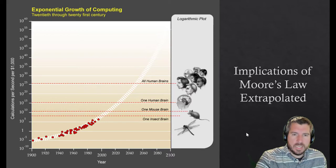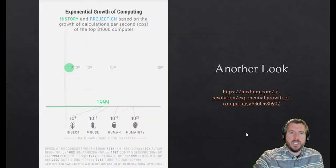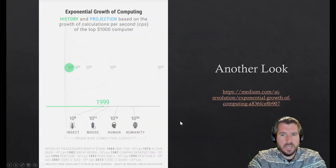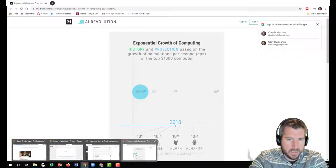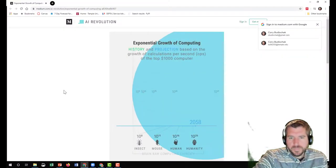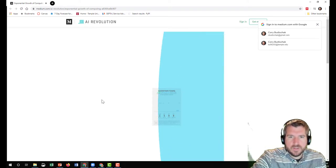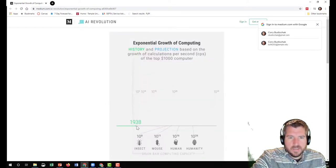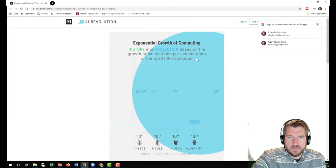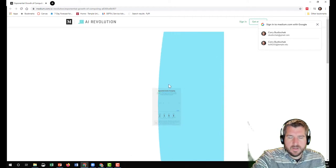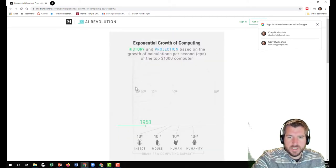One more thing we can think about, just to show you another look at exponential growth, is this website here. I think it gives you a better look at it, really. If we look at it, it starts with this little dot in the 1940s, 50s, 60s. This is the growth of computing. And again, it's the calculations per second of the top $1,000 computer.